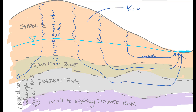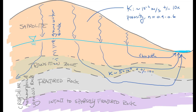Now we put in the properties. The saprolite hydraulic conductivity is going to be around 10 to the minus 6 meters per second, with a fairly high porosity, about 0.4 to 0.6. The transition zone hydraulic conductivity is a bit higher, about 5 times 10 to the minus 6, plus or minus a factor of 10.